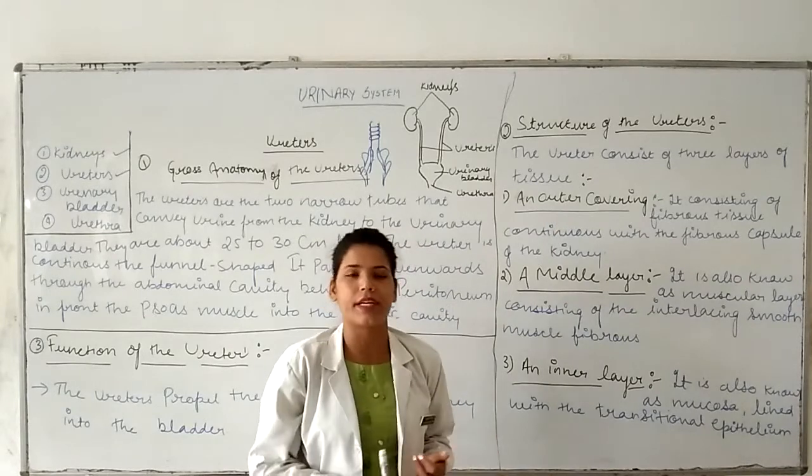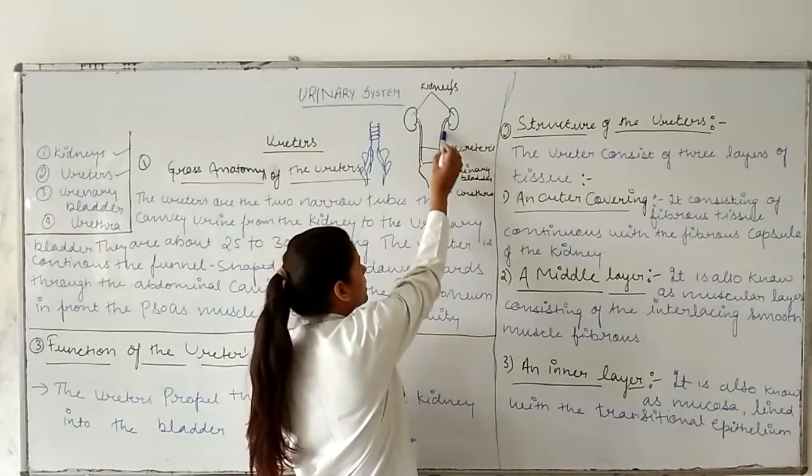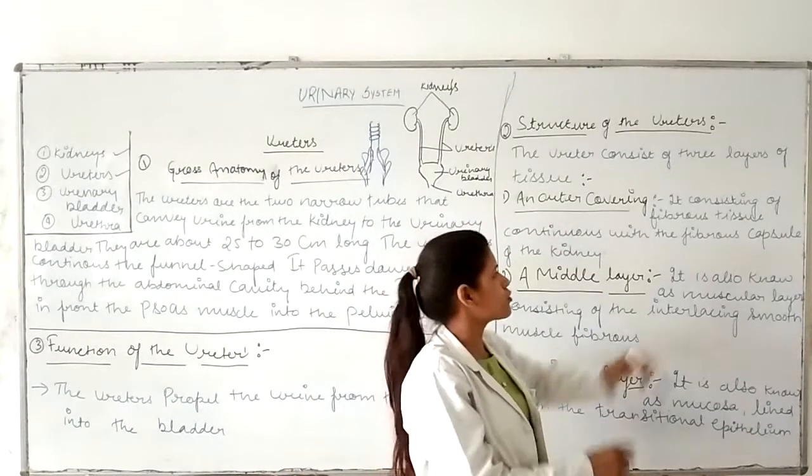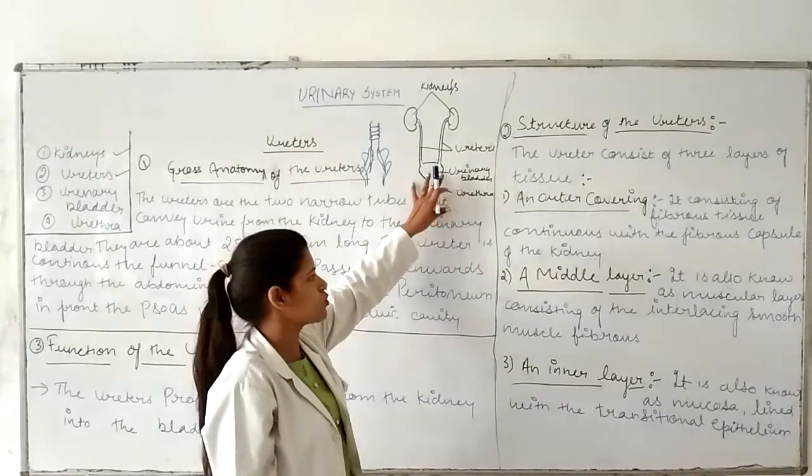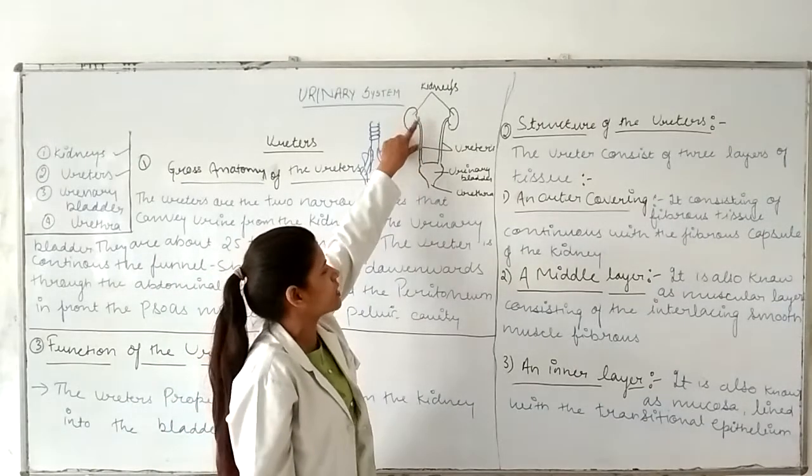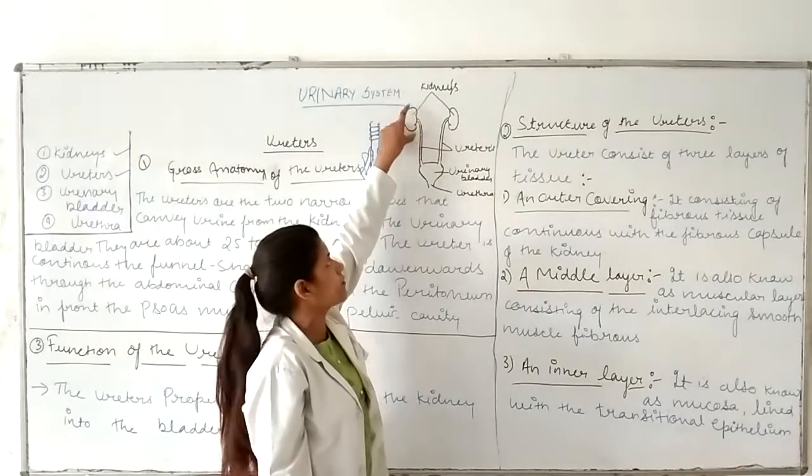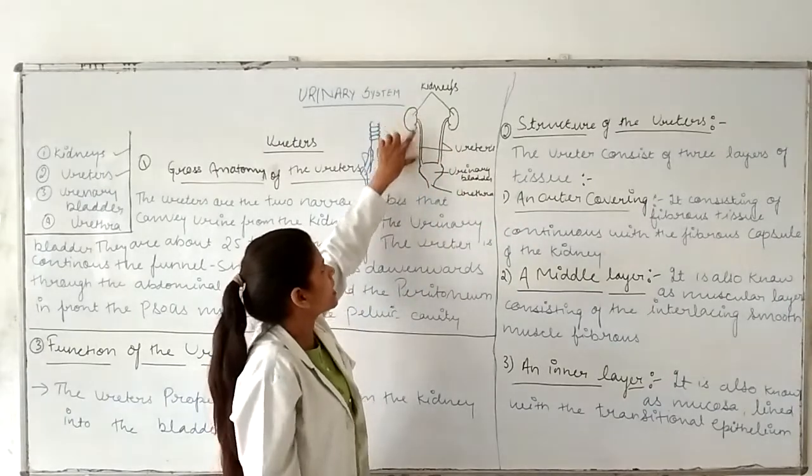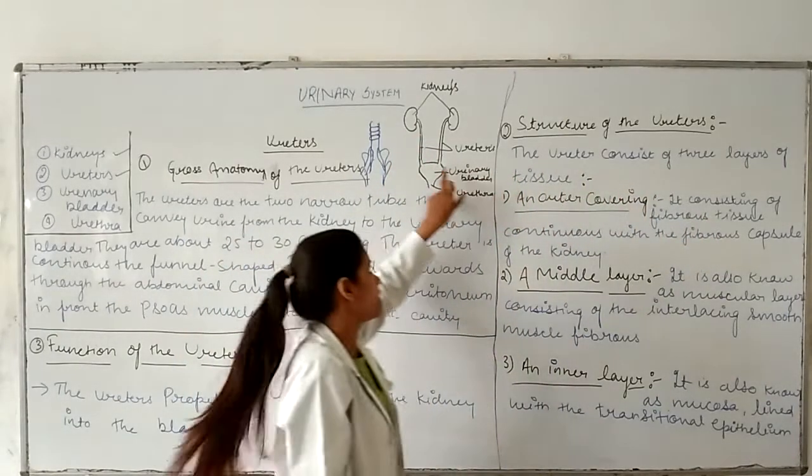First is the outer covering, the outer layer. The outer layer of the ureter is composed of fibrous tissue. The outer layer is a fibrous capsule made of connective tissue.